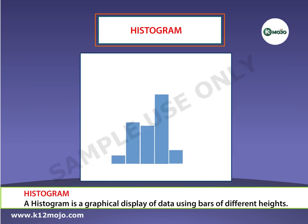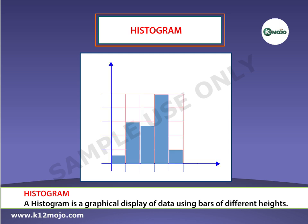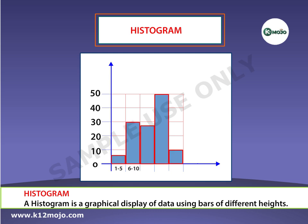A histogram is a graphical display of the data using bars of different heights. In order to draw a histogram, we need a frequency table. It is similar to a bar chart, but a histogram groups numbers into ranges. This histogram is divided into ranges of 1 to 5, 6 to 10, and so on.